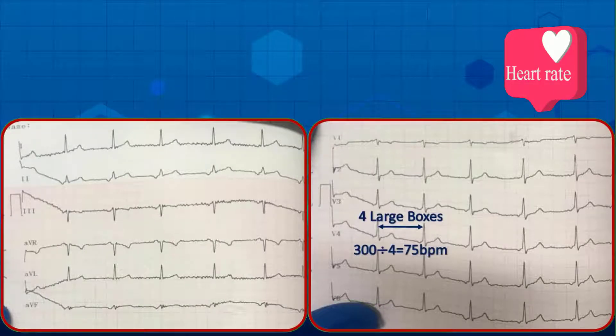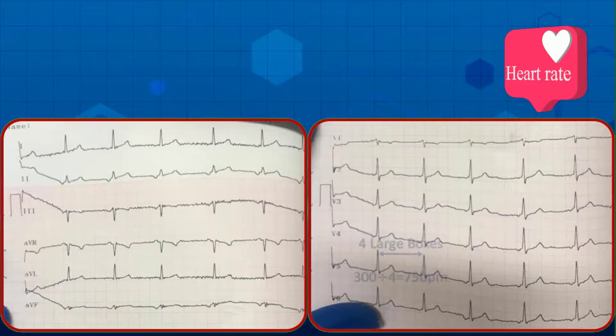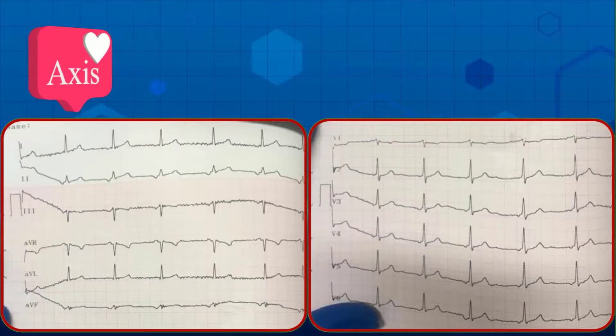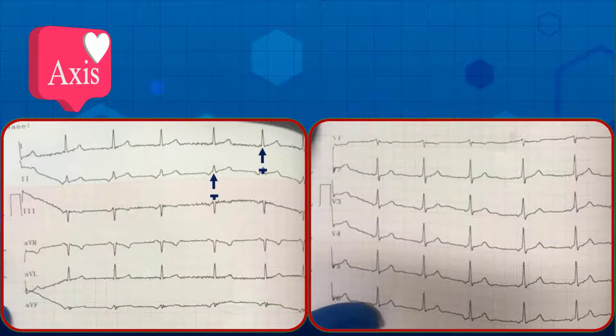Third: calculate the heart rate. The RR interval is approximately 4 large boxes, so the heart rate is 75 beats per minute.